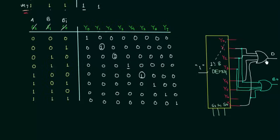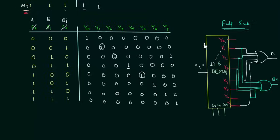This circuit works as a full subtractor. This is all you need to do to obtain a full subtractor using a 1-to-8 demultiplexer — a simple yet very important topic. In the same way you can implement a full adder, which you can try yourself. See you in the next one.